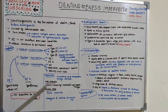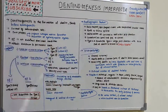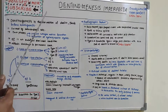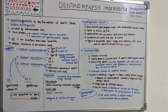In radiographic features, there is a bulb-shaped or bell-shaped crown with constriction at the cervical area — the cervical area is constricted, giving a bulb or bell appearance with the tip constricted. There are thin and spiked roots. Obliteration of both the coronal and radicular pulp chambers is a unique feature of dentinogenesis imperfecta.